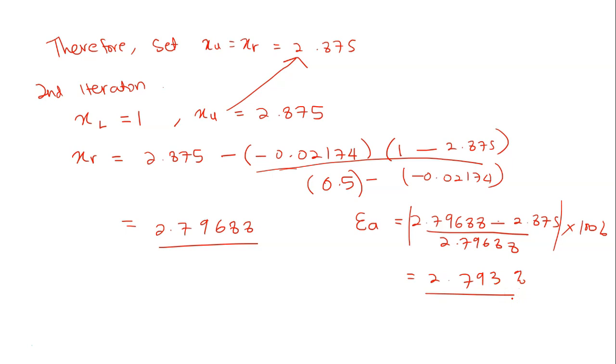So obviously you need to do another iteration because it requires three iteration. But then you need to set in order for you to know what is your x_u and what is your next x_l. So you need to make this conclusion.